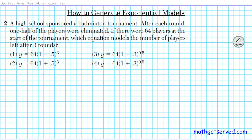For number two, we're going to be learning how to generate exponential models. We're going to be given a real-life scenario and use our formula for exponential decay and growth functions to generate models. Question two reads: a high school sponsored a badminton tournament. After each round, one half of the players were eliminated. If there were 64 players at the start of the tournament, which equation models the number of players left after three rounds?